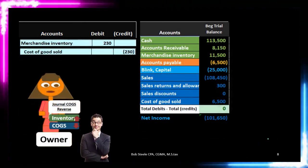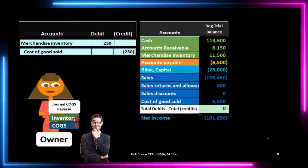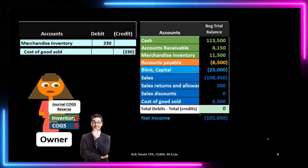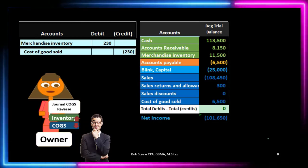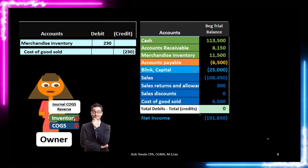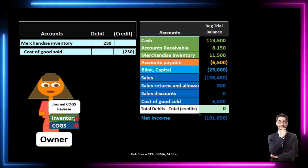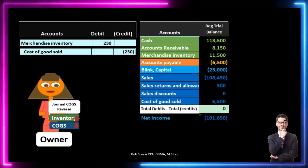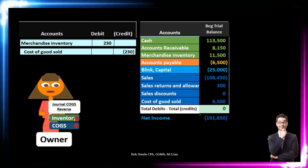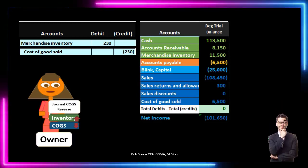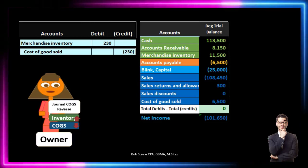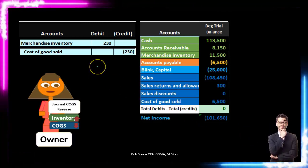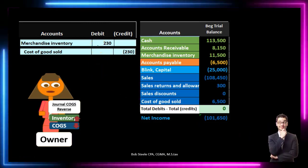The second component of the return transaction — recall when we made the sale there are two pieces. First we debited accounts receivable and credited sales, which we just reversed. Second, we debited cost of goods sold and credited merchandise inventory. Now we're going to reverse that second component. We're going to debit merchandise inventory and credit cost of goods sold. Think of it as simply reversing the normal sales transaction for that second journal entry.